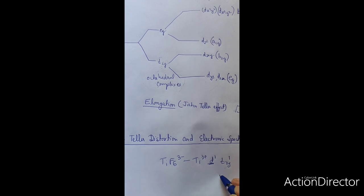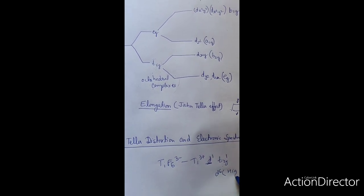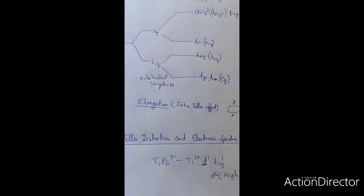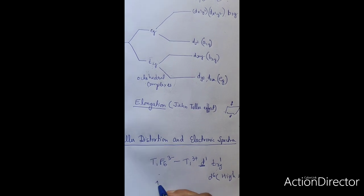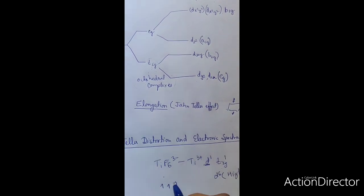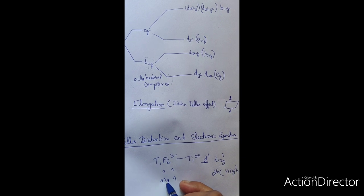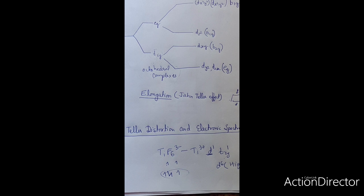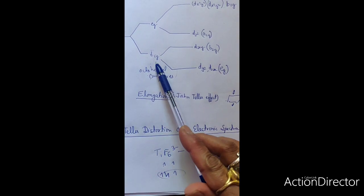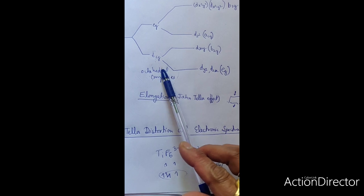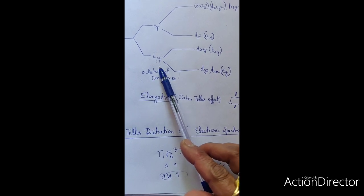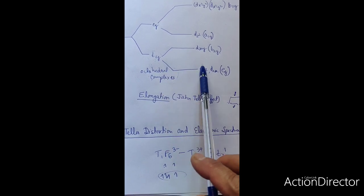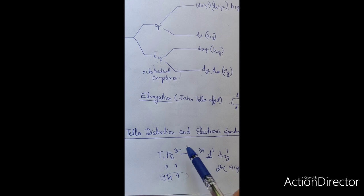Likewise, in case of D6 high spin configuration, the electrons fill the T2g set asymmetrically. Again T2g is asymmetrically filled, so distortion occurs. This means the degenerate orbital loses its degeneracy and distorts to a lower symmetry molecule. This is known as Jahn-Teller distortion.